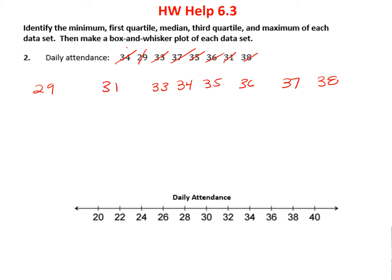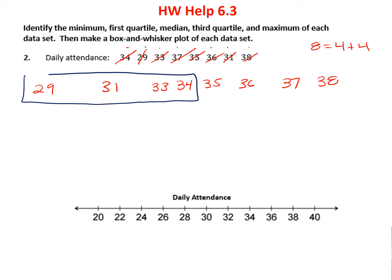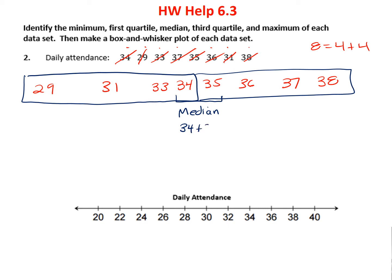Now I'm going to count the numbers: 1, 2, 3, 4, 5, 6, 7, 8. There are 8 of them. That means 8 is going to divide equally as 4 plus 4. So there is no one middle number. My median here is going to be halfway between the two middle numbers. I take 34 plus 35 and divide by 2, so my median is 34.5.